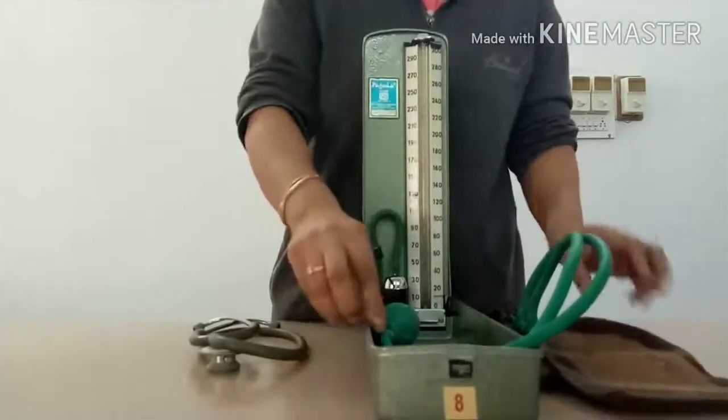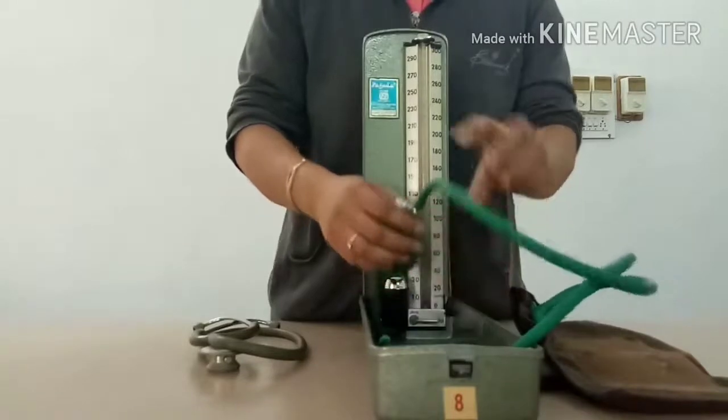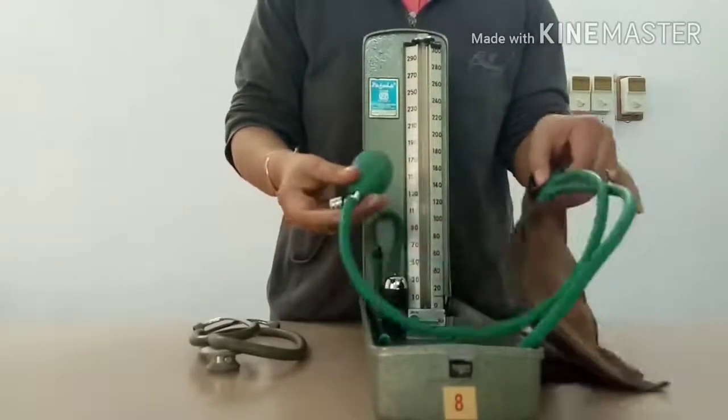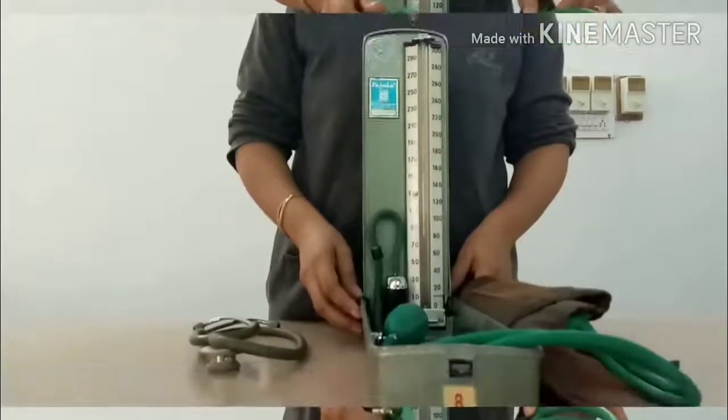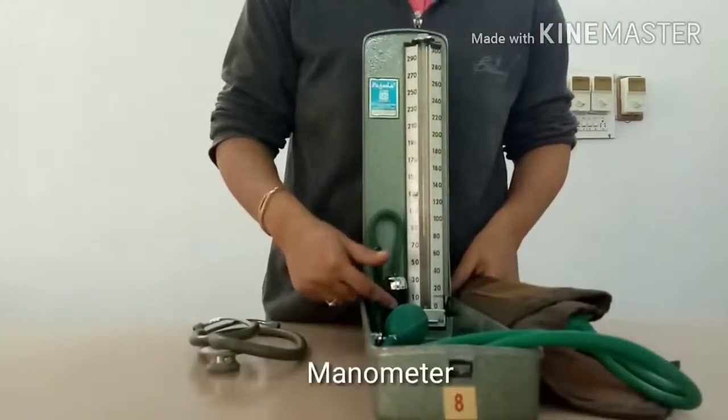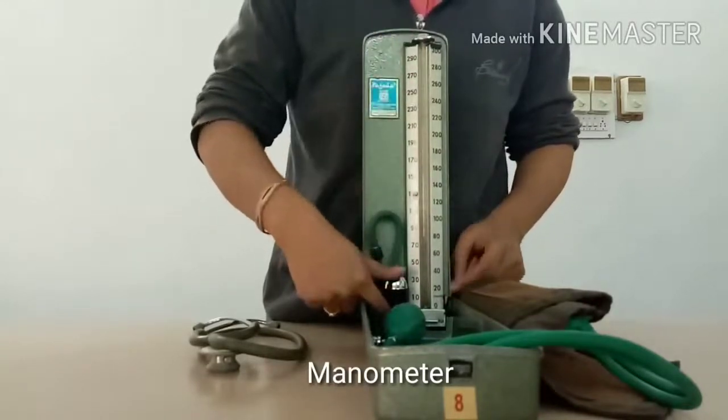A small valve is provided between the pump and the bag which permits the escape of air and reduction of the pressure when required. The manometer is a U-shaped tube, one limb being broader than the other.